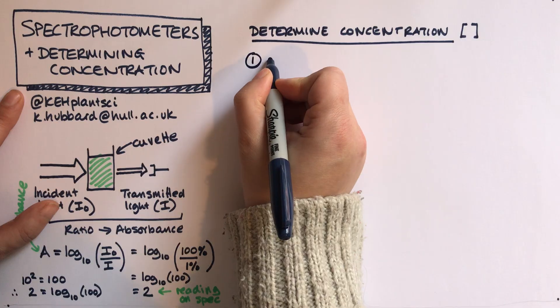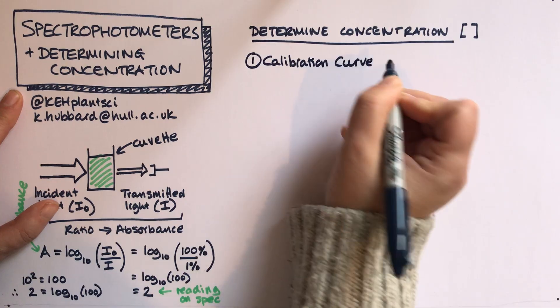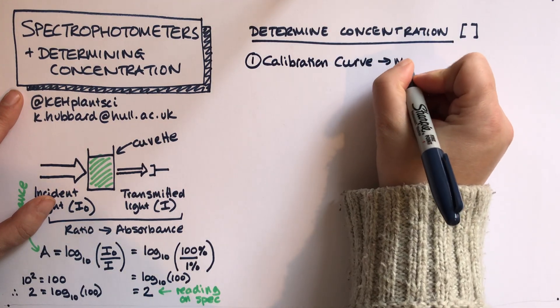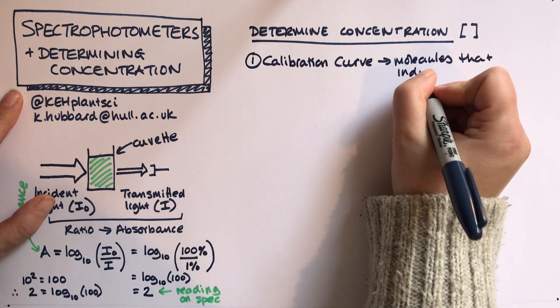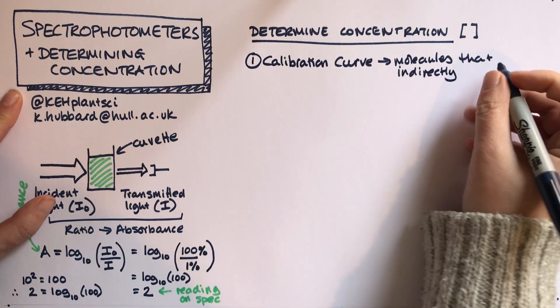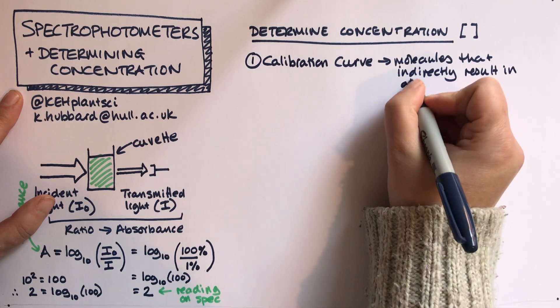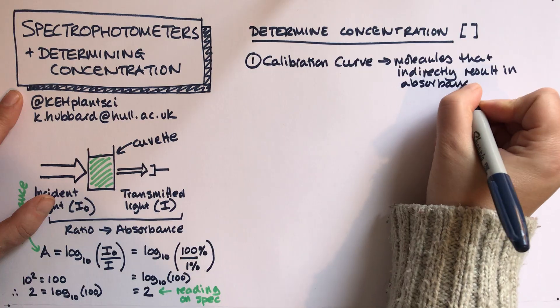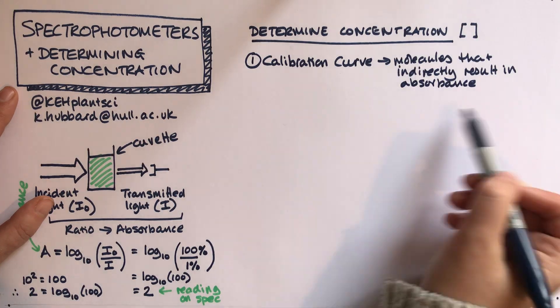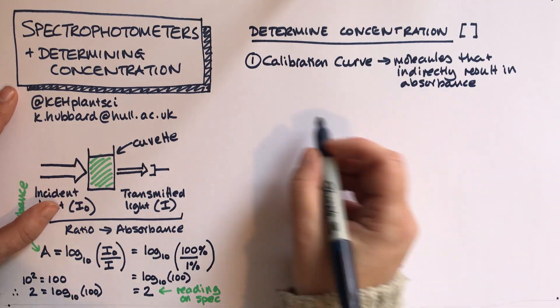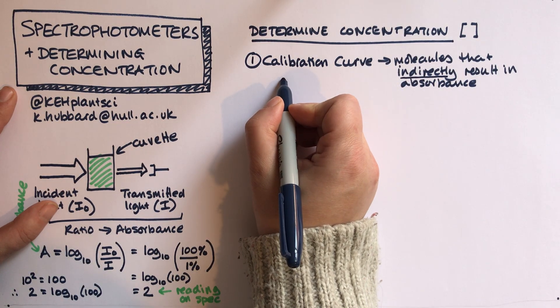There are two different ways that we can use the spectrophotometer to determine concentration. The first way is to construct a calibration curve. This is good for molecules that indirectly result in absorbance. This might be where you have a dye that reacts with the molecule that you're interested in, and it's the dye that you're measuring.